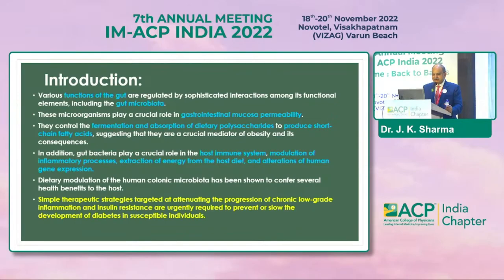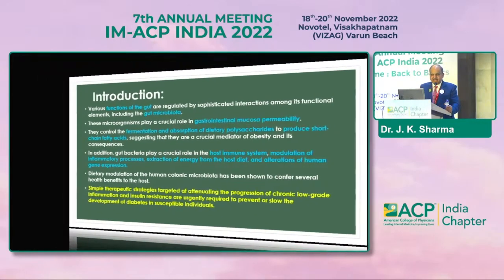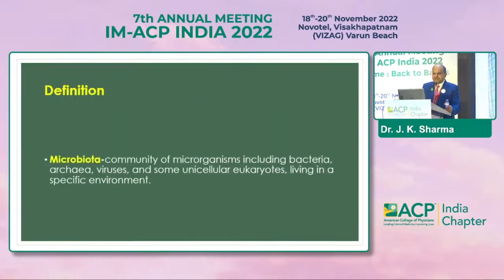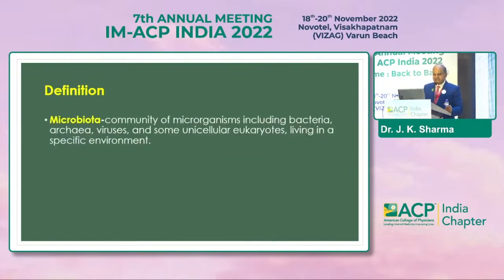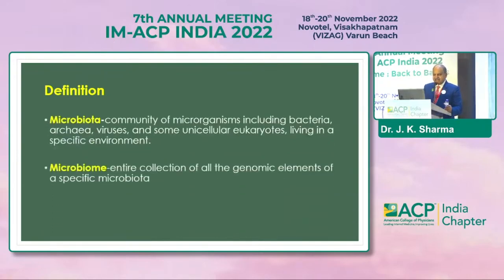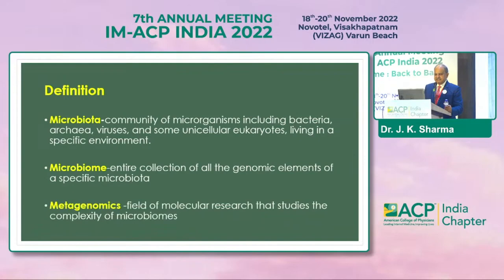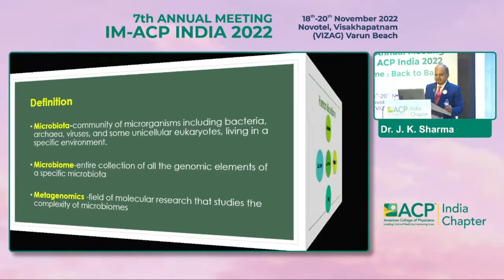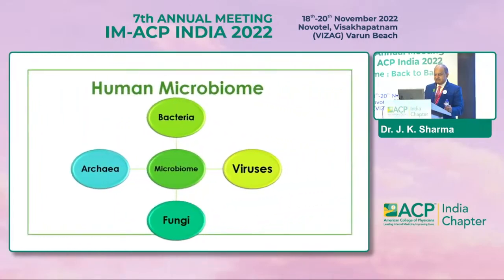When we talk about definitions: the microbiota is the community of microorganisms including bacteria, archaea, viruses, and some unicellular eukaryotes living in a specific environment. The microbiome is the entire collection of all the genomic elements of a specific microbiota. Metagenomics is the field of molecular research that studies the complexity of these microbiomes.